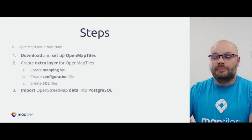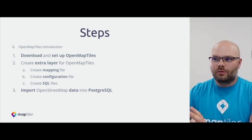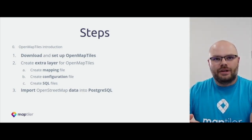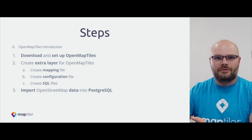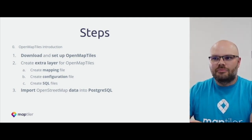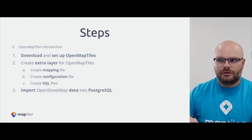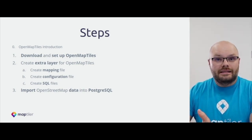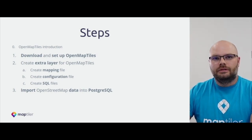These are the three main steps to accomplish Block 1. First is to download and set up the OpenMapTiles project - I hope everyone was able to pull the Docker images. The second step is to create an extra layer in the OpenMapTiles project where we add three main new files: a mapping file, configuration file, and SQL files. The last step is to import the downloaded OpenStreetMap PBF into PostgreSQL.